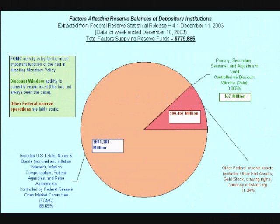The Fed has three main tools it uses to control the level of spending in the economy. The first is changing the reserve requirements for banks. The second is changing the discount rate. And the third is open market operations. Let's look at all three.